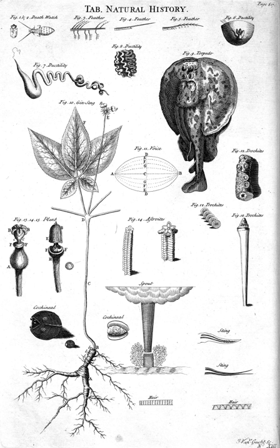In antiquity, natural history covered essentially anything connected with nature, or which used materials drawn from nature, such as Pliny the Elder's encyclopedia of this title, published circa 77–79 AD, which covers astronomy, geography, humans and their technology, medicine, and superstition, as well as animals and plants.